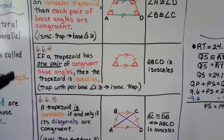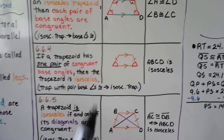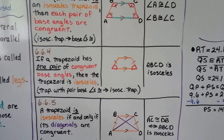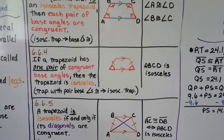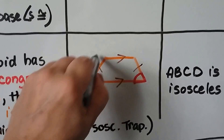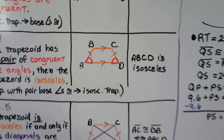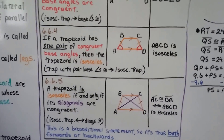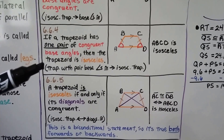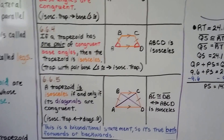Theorem four: if a trapezoid has one pair of congruent base angles, then the trapezoid is isosceles. So ABCD is isosceles. We can write the geometric notation as: trapezoid with a pair of base angles congruent, therefore isosceles trapezoid.